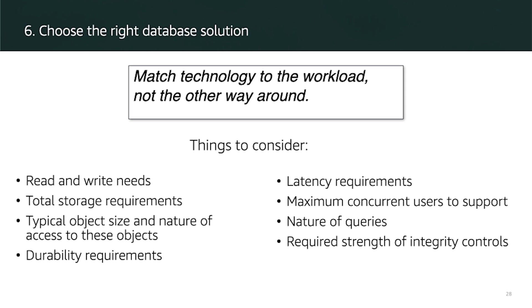Choosing the right database solution is very important for your application. In traditional data centers and on-premises environments, limits on available hardware and licensing can constrain your choice of a data store solution. AWS recommends that you choose a data store based on your needs for your application environment. Where possible, eliminate single points of failure from your architecture. This does not mean you must always duplicate every component; depending on your downtime service level agreement, you can use an automated solution that only launches the component when needed.